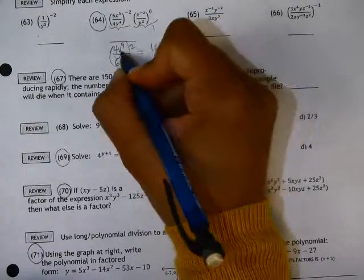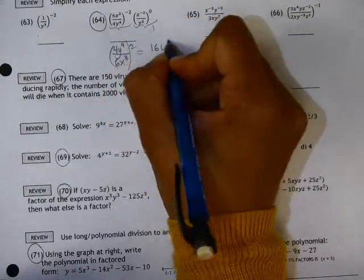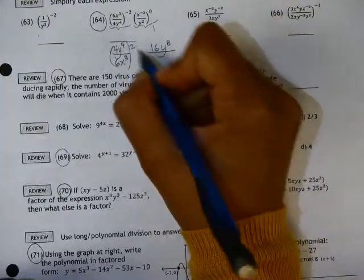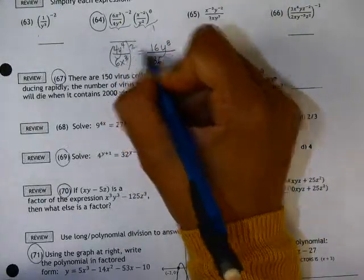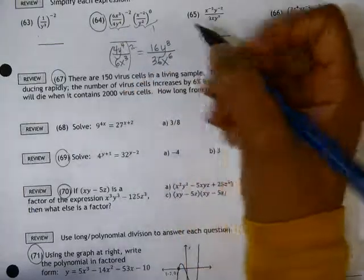4 squared is 16. y to the 4th squared means I need to multiply exponents, y to the 8th. 6 squared is 36. x cubed squared, multiply exponents is x to the 6th.